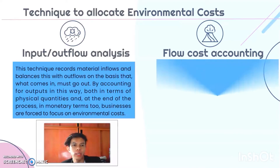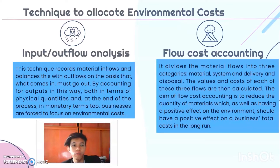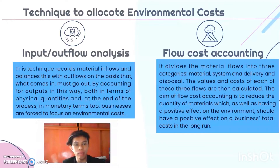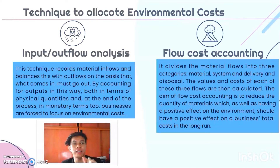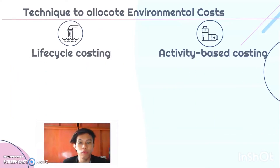The second technique is flow cost accounting, which divides material flows into three categories: materials, system, and delivery and disposal. The values and costs for each of these three flows are calculated. The aim is to reduce the quantity of material, which should have a positive effect on both the environment and the business's total costs in the long run.